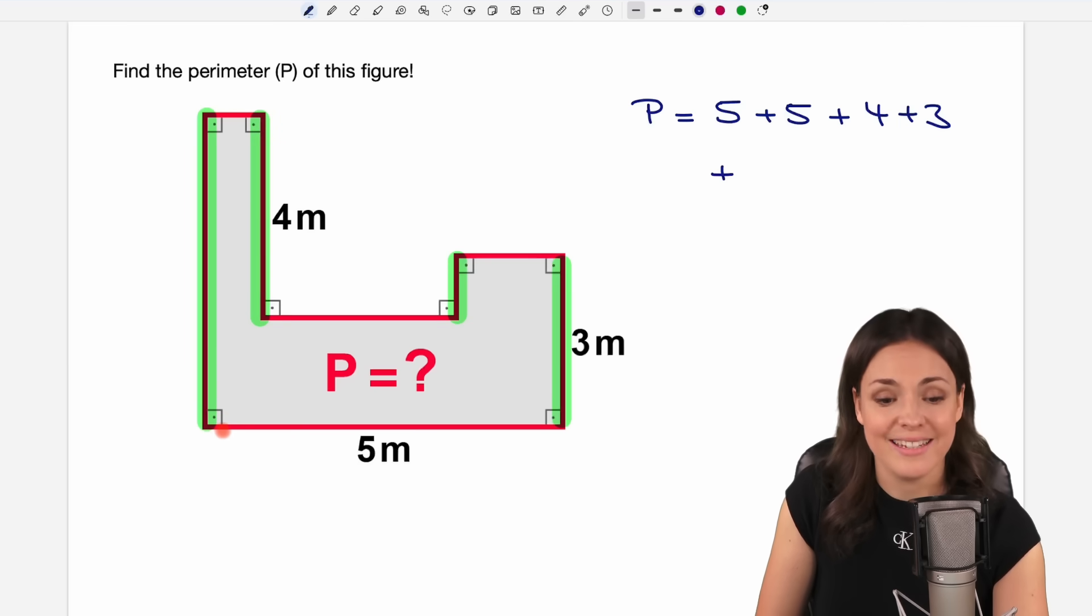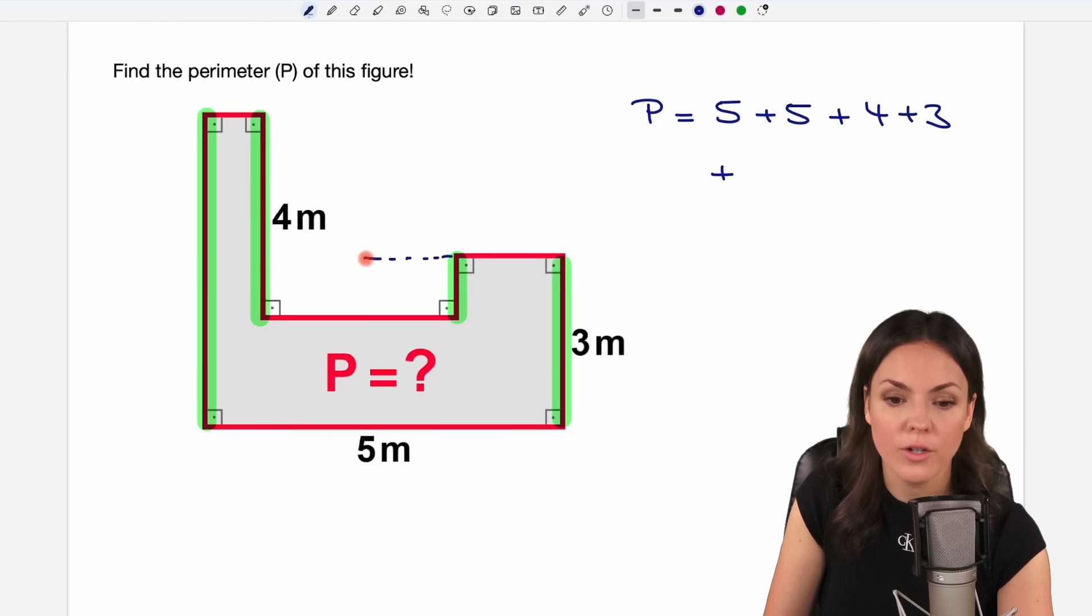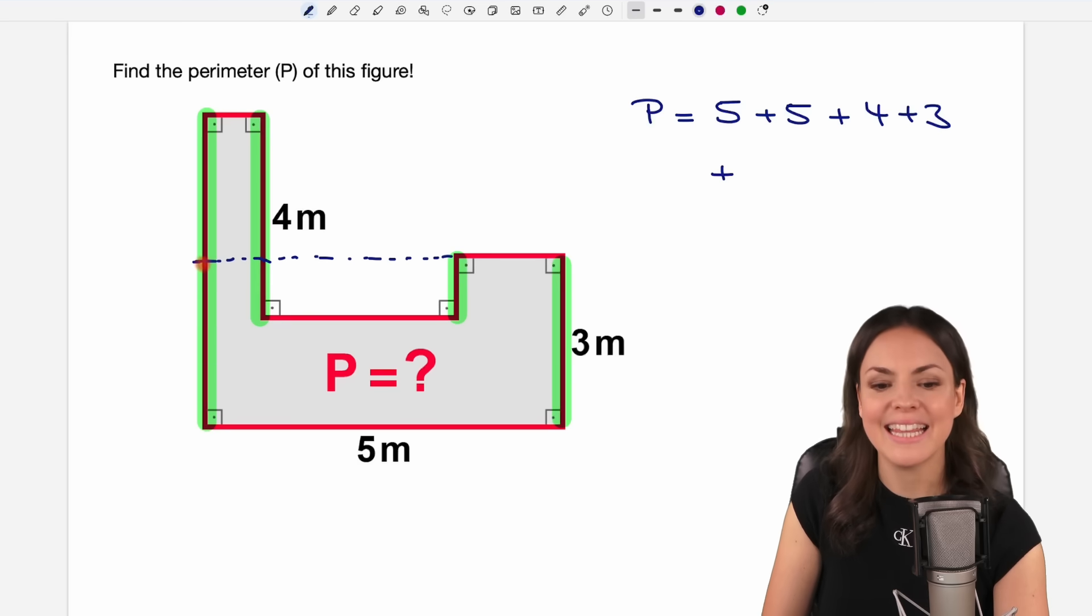And this time we can't say that this long side is four plus three because they are overlapping here. So this time, unfortunately, it's not that easy. We only know that this part here is of length three. We don't know how long this overlapping part is. I just call it x.